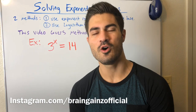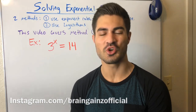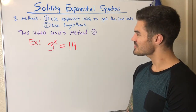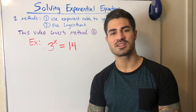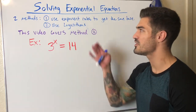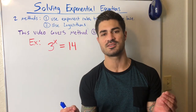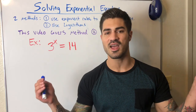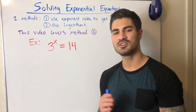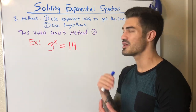Hello everybody, welcome to another video. Hope you're ready to flex those brain muscles. Today we're going to continue solving exponential equations. When we see a variable in the exponent, there are two main methods. The first method uses exponent rules to get the same base on both sides, but in some cases we can't manipulate them to have the same base.